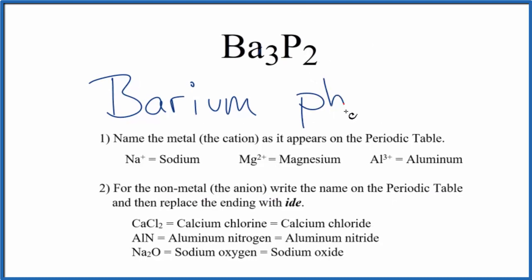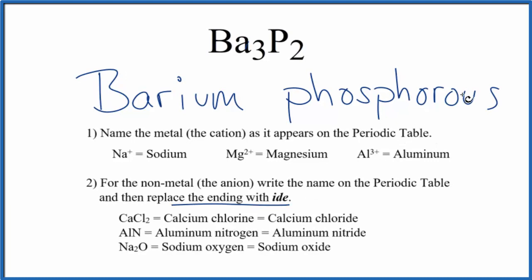Lowercase p, and we'll cross out the ending and replace it with IDE. So we have IDE. So that makes the name for Ba3P2, barium phosphide.